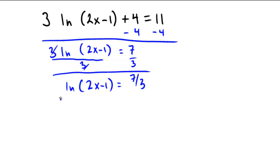Raise both sides e to those powers so that we can cancel out the logarithm. 2x minus 1 equals e to the 7 thirds. And now we're into something that's more linear, that's linear and easier to work with. Add 1 to both sides. e to the 7 thirds plus 1.